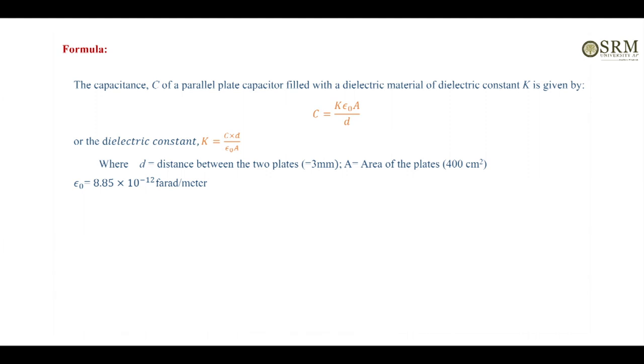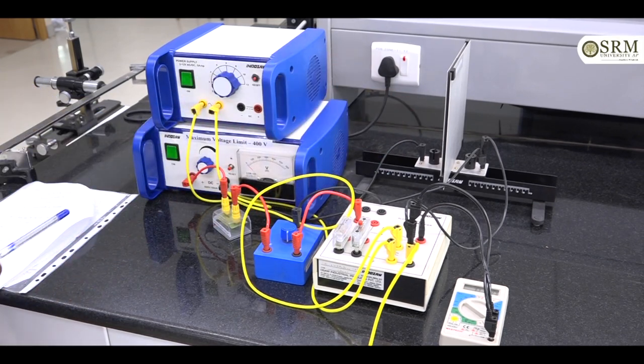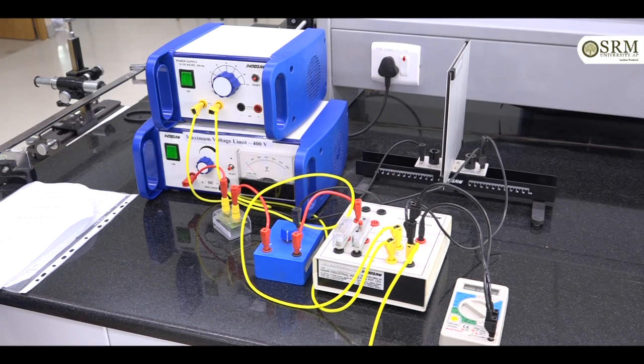Epsilon naught is permittivity of free space, equal to 8.85 times 10 to the power minus 12 C squared per newton meter squared. Capital A is area of the parallel plate capacitor, equal to 400 centimeter squared. This is the formula required for the dielectric constant experiment.